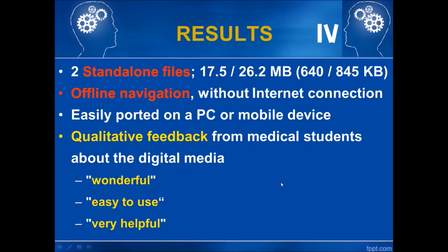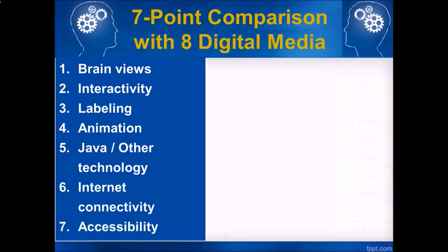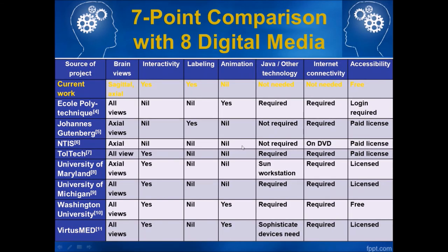Before I demonstrate the thing to you, let me tell you the results of our work. We created two standalone files — one of them was 17.5 megabytes, the other was 26 megabytes — and they are available offline, not requiring an internet connection, easily portable on a PC or a mobile device. Qualitative feedback from students was very good. We also did a seven-point comparison with eight other digital media from various institutions and technologies, and we found that our work scored six out of seven, which is 86%, compared to the work of other institutions. The parameters were: number of brain views available, interactivity, labeling, animation, Java or other technologies required, internet connectivity requirement, and accessibility. The only place we lacked was animation — that's why we scored six out of seven.